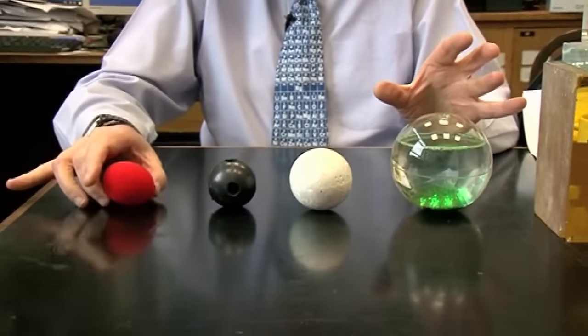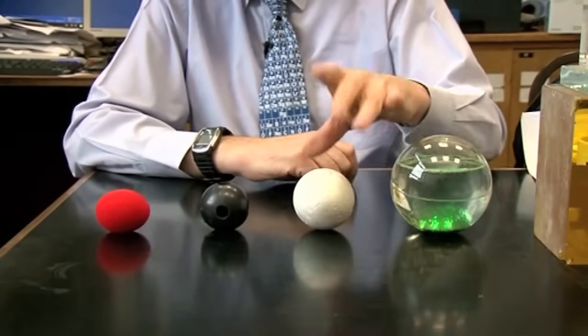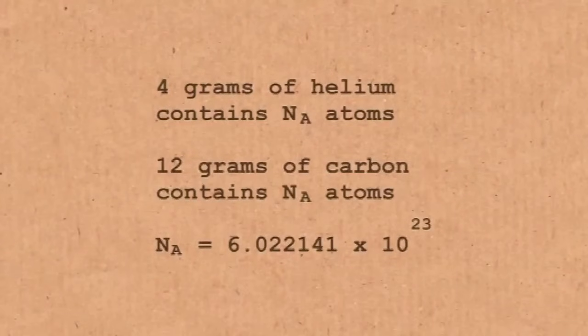Later chemists took Avogadro's idea and developed it into the statement that if you take 1 gram of hydrogen, 12 grams of carbon, 16 grams of oxygen, or 238 grams of uranium, the number of atoms in that sample will be exactly the same. And that number was given the name Avogadro's number, in honour of Avogadro who started thinking about these things in the first place.